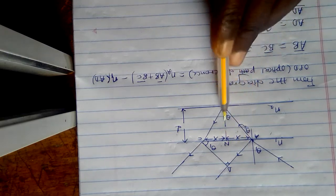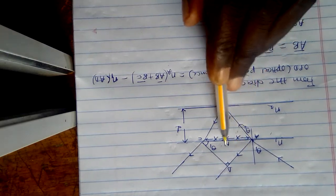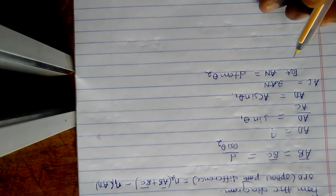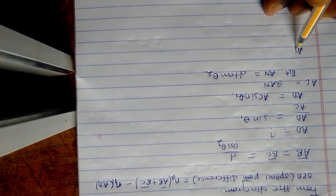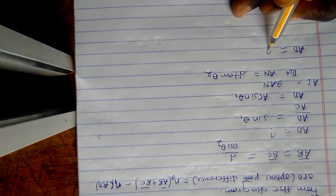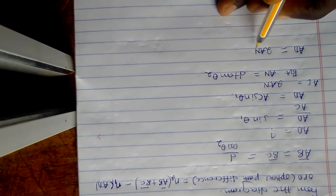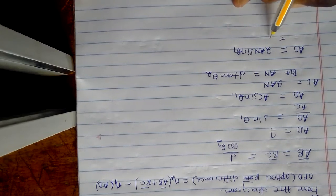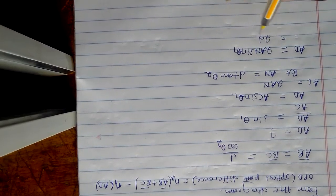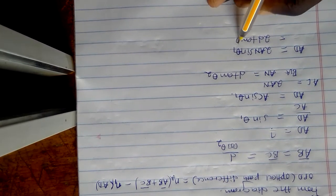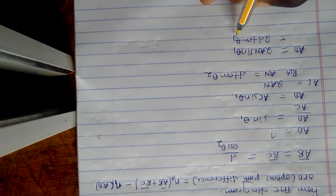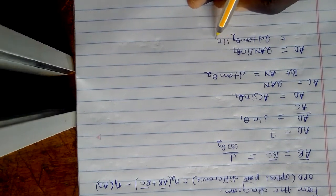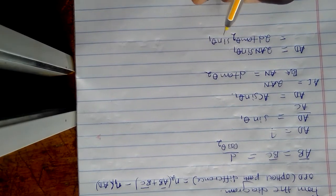From the geometry, AN is equal to D·tan theta2. Therefore, AD equals 2·AN·sin theta1, which gives us AD equals 2D·tan theta2·sin theta1.